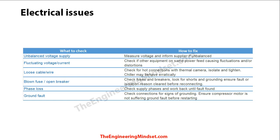Moving on to electrical issues: an unbalanced voltage supply is one common fault — measure voltages on each phase to confirm they're balanced. This could indicate a problem with the electrical switchgear within the building. Another common problem is fluctuating voltage or current, usually caused by other equipment on the same circuit creating distortions in the waveforms. The chiller may detect this and shut down as a precaution, particularly if there's a sudden inrush current from another plant item on the same circuit.